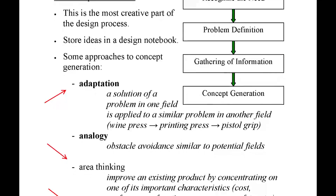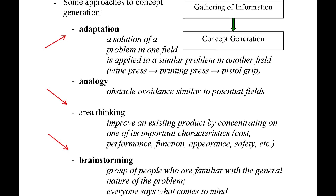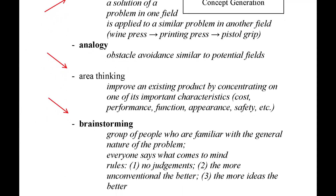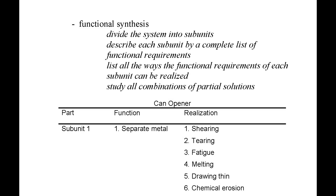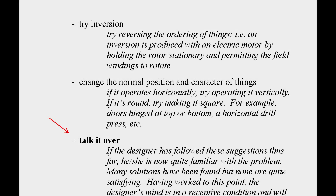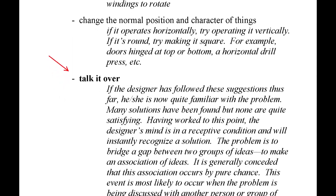Area thinking is another common example of concept generation. We find this method applied to most of the consumer items around us, ranging from automobiles to electronic devices like cell phones and laptops. Apple, for example, does not come out with a radically new iPhone every year, but rather focuses on area improvements to the base architecture carried over from the previous model. Brainstorming is probably the most common example of concept generation, and one that you will use countless times throughout your careers as engineers in industry. There are several other methods of concept generation which work quite effectively depending on the project and the designer's personality.